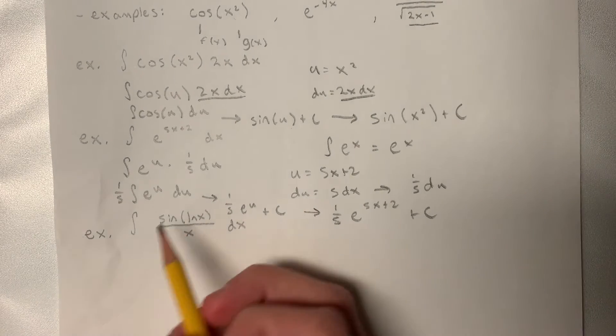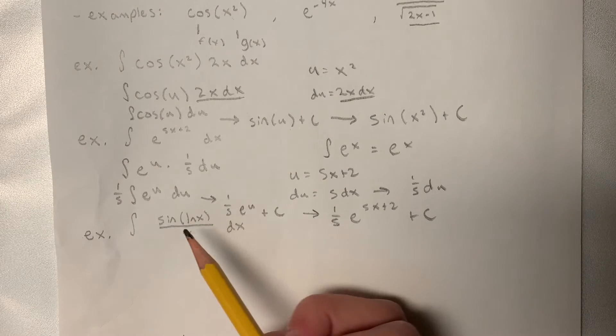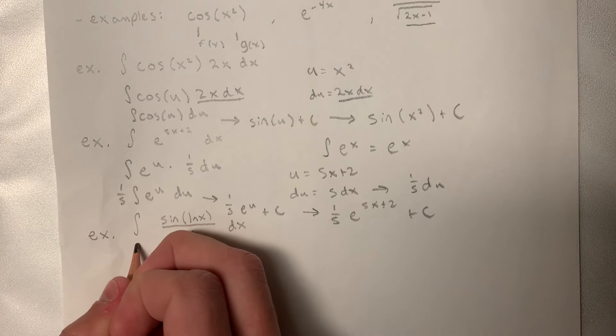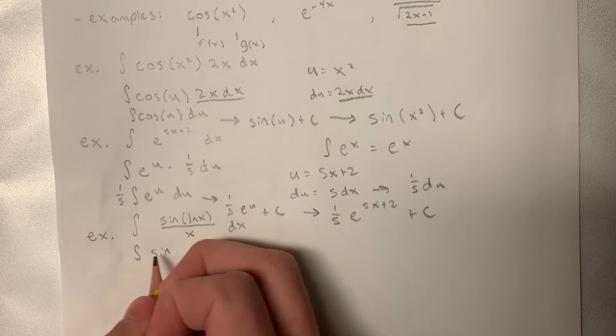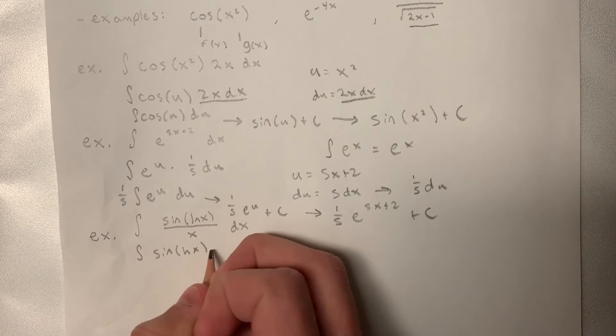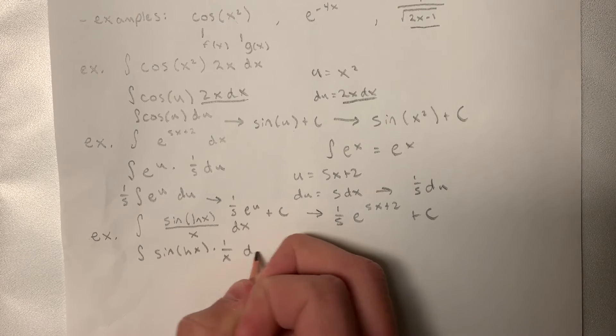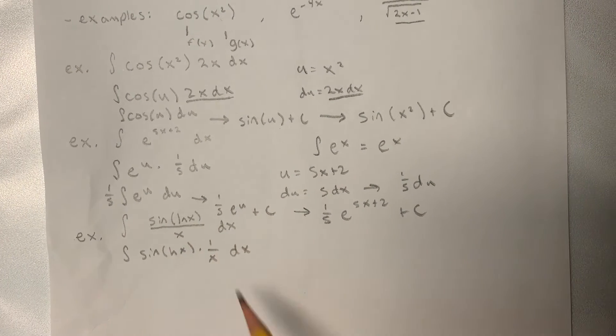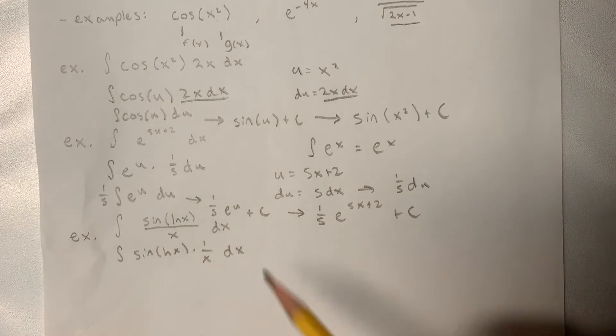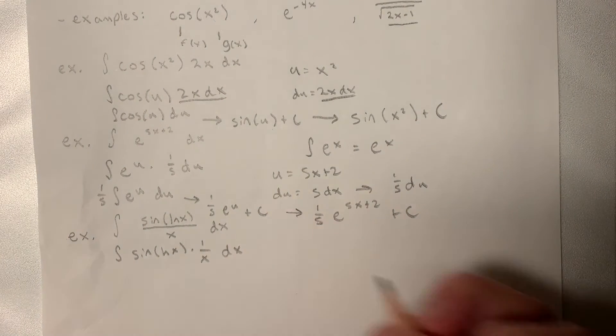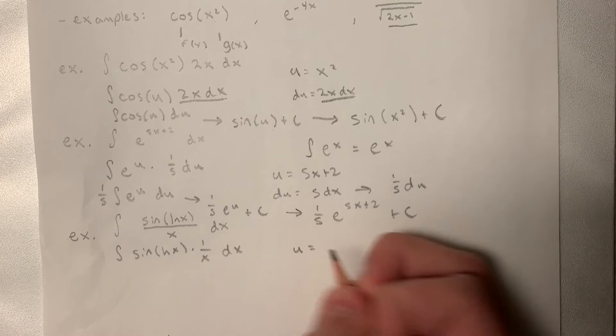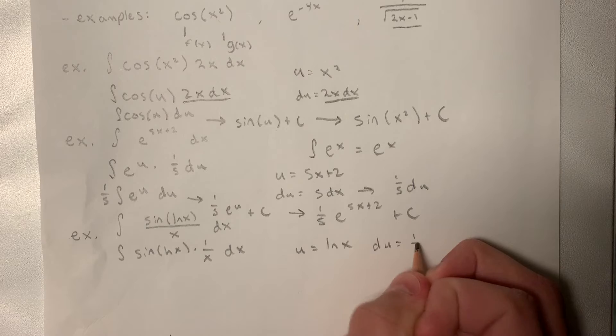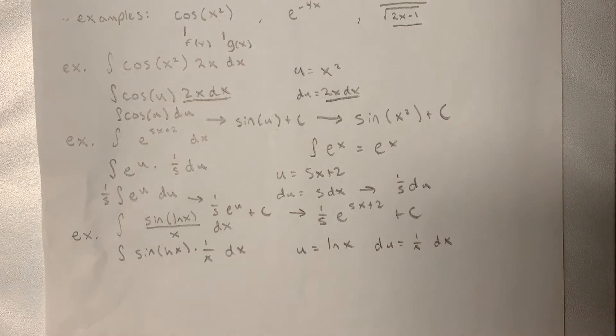Okay, for the next example we have the integral of sin of ln of x divided by x. So let's rewrite this so it looks a little nicer. Okay, so all I did was just bring out the numerator into the front and call this 1 over x dx. So let's take our u to be the function inside of the sin, so ln of x.